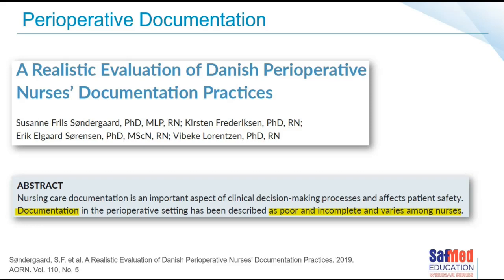Documentation can definitely affect patient safety — for example, if we record that our Bowie-Dick test passed when in fact it didn't, that could have a really profound effect on the patient. Documentation in the perioperative setting, as described in this published paper, has often been poor and incomplete, and that's very true for CSSD as well. Some staff are really good with documentation and some really aren't, so this research aimed to understand what influenced the quality of staff documentation.